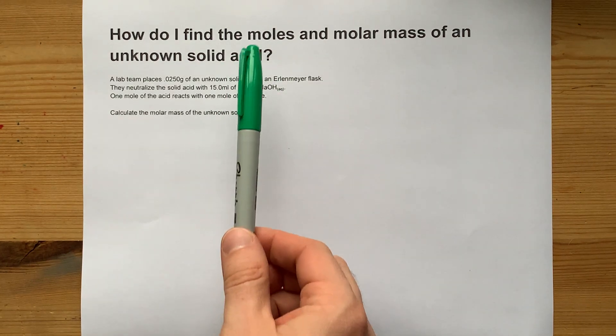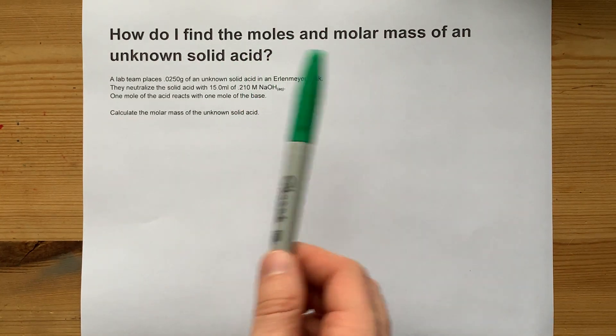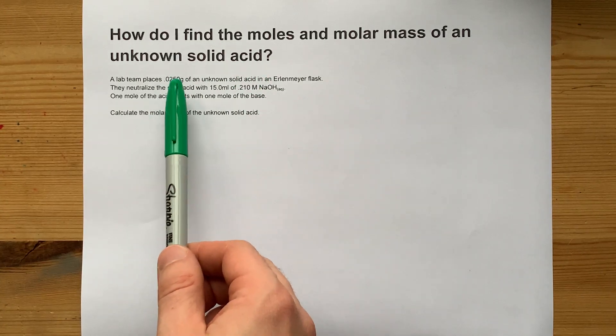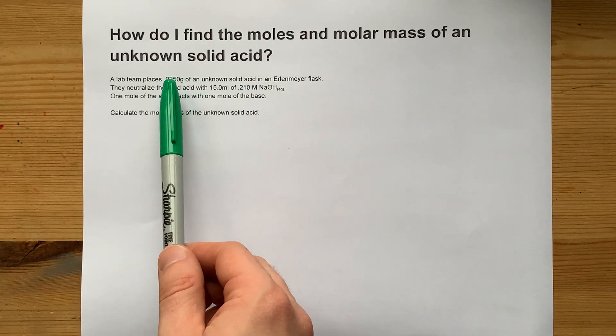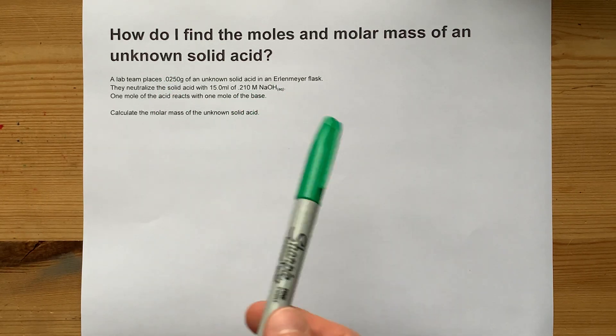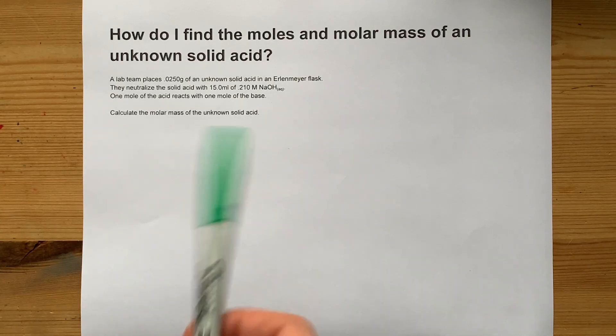How do you find the number of moles and the molar mass of a solid acid when all you're given is how much acid in grams you used and the volume and concentration of the NaOH or base that was used to neutralize it?